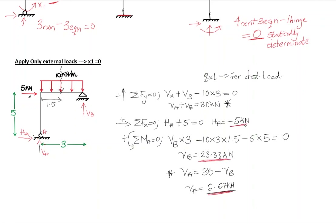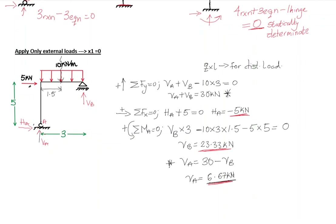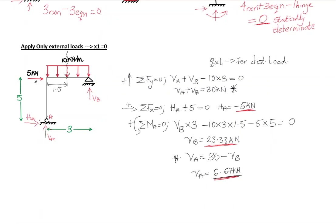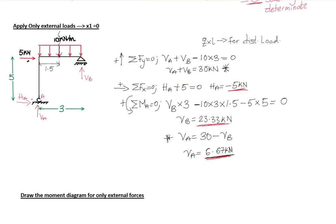Time is short, so let's talk about the moment diagram. Before drawing it, let's perform a check to verify the reactions are correct. We'll take the sum of moments at point B. If the result equals zero, all reactions are correct and we can move on. It's important to check before continuing — if they're wrong, all subsequent answers will be wrong.